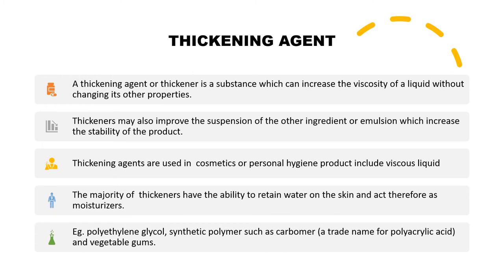Thickening agents are substances which can increase the viscosity of a liquid without changing its other properties — the main property remains the same. But once you add the thickening agent, it enhances the viscosity, making the formulation more easy to handle and more appropriate from the consumer point of view. Thickeners may also improve the suspension of other ingredients or emulsions, which increases the stability of the product.